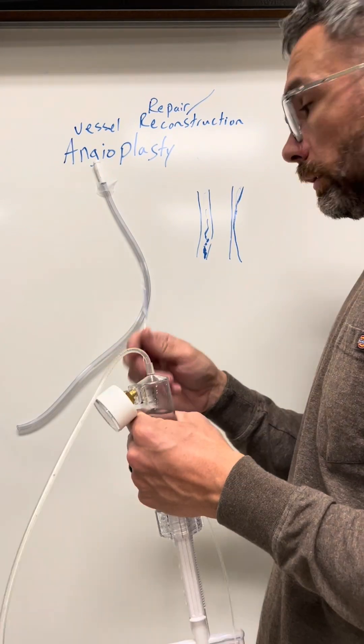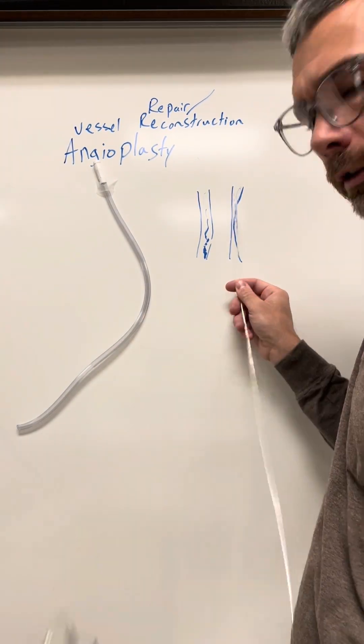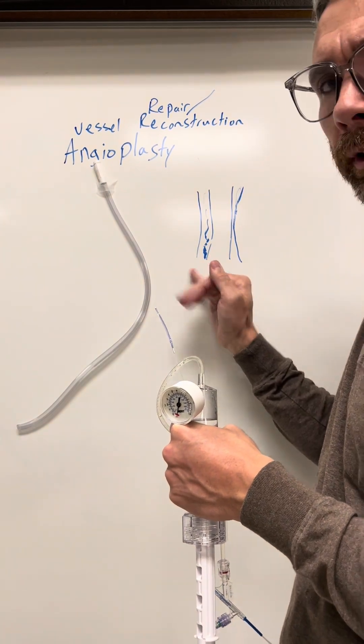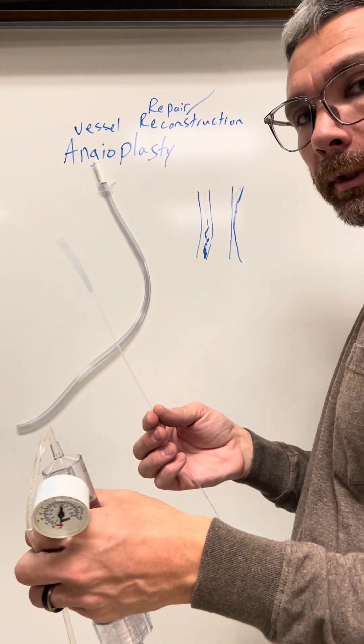So the goal is you put the balloon up in here, blow it up, shoot the dye back to the catheter, see if that worked and should. It will look more like this so everything flows evenly and smoothly. Balloon angioplasty.